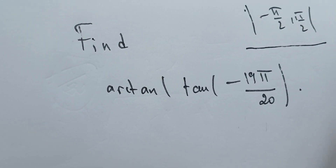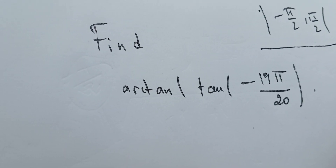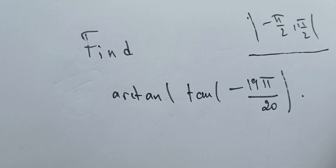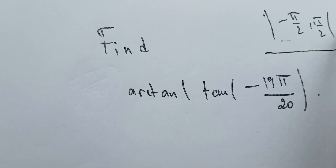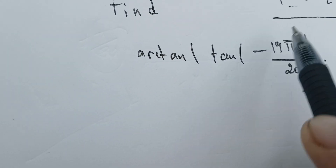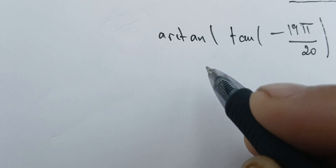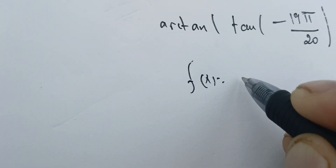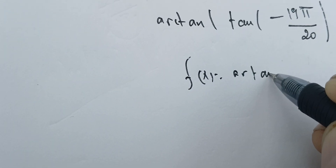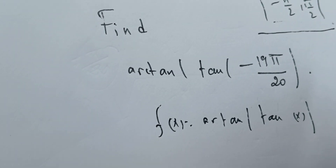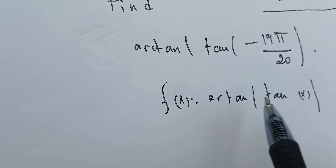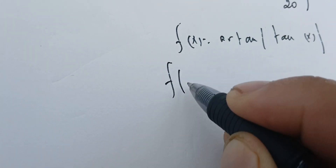We will come back to this function and study it in detail. We'll explain it later. But for now, we treat the following function: f(x) = arctangent of tangent of x, with x being in this interval. And we prove that this function is odd.